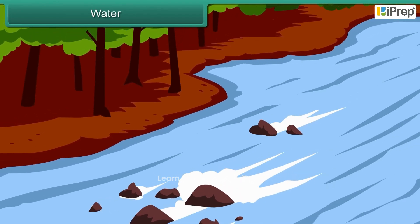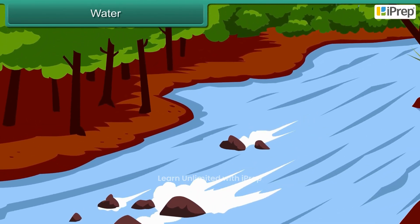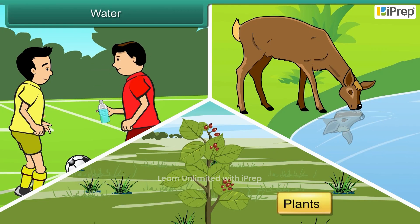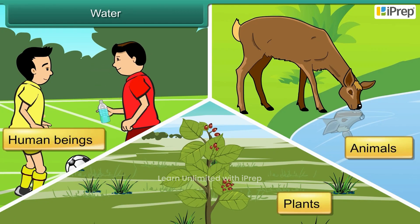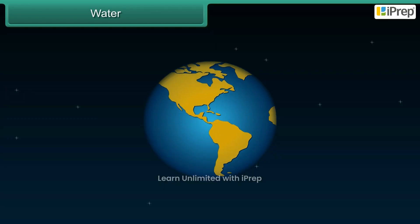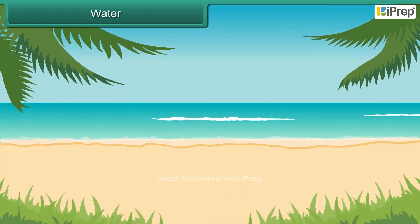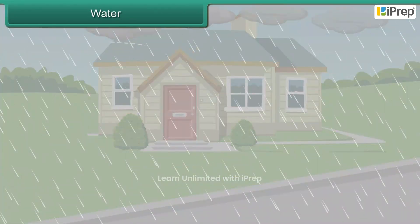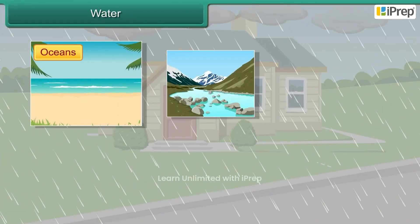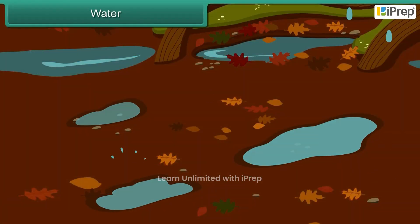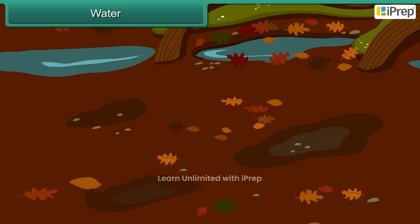Water is essential for the survival of all living things. Plants, animals and human beings need water. The earth is the only planet where water exists. Water comes from the sky as rain and fills up oceans, seas, lakes and ponds. It is also found deep under the ground.